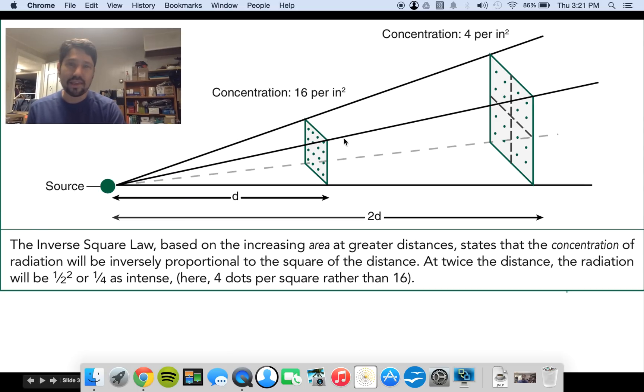Another way to look at it is if we think of each dot as an X-ray photon. At one distance, we've got 16 X-ray photons per square inch. But when we double that distance, now we've only got four X-ray photons in every square inch.